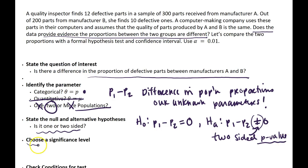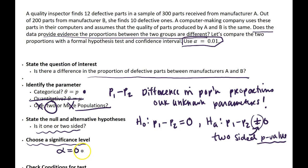The next step is to choose the significance level. It's already been chosen for us — we're going to use alpha equal to 0.01, which implies that we'll do a 99% confidence interval and compare our p-value to a level of 0.01 to determine whether or not we should reject the null hypothesis.